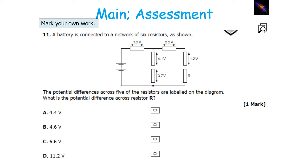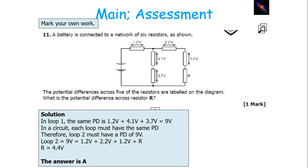From Kirchhoff's laws, in a loop the EMF into a circuit equals the PD out, and each loop supplied by the same EMF source must have the same potential difference. In loop 1, the PD is 1.2 volts plus 4.1 volts plus 3.7 volts, so it's 9 volts. Because each loop must have the same potential difference, loop 2 must also have a PD of 9 volts. In loop 2, we know the total is 9 volts and it has 1.2, 2.2, and 1.2 volts, so the value of R must be 4.4 volts to get an overall value of 9 volts.